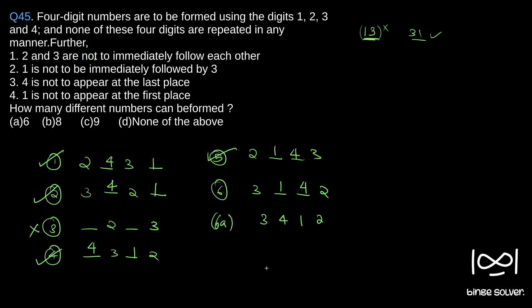All cases are now done. In total we have 1, 2, 3, 4, 5, 6 valid cases. One arrangement had no valid case and is struck off. So in total we have six valid numbers that can be formed, and the answer is option A: 6. The solution to question 45 is 6.